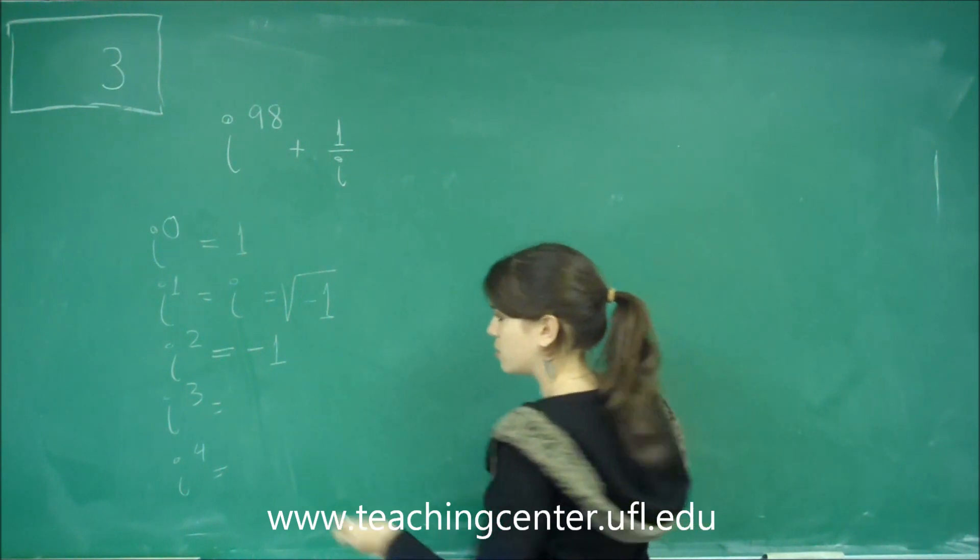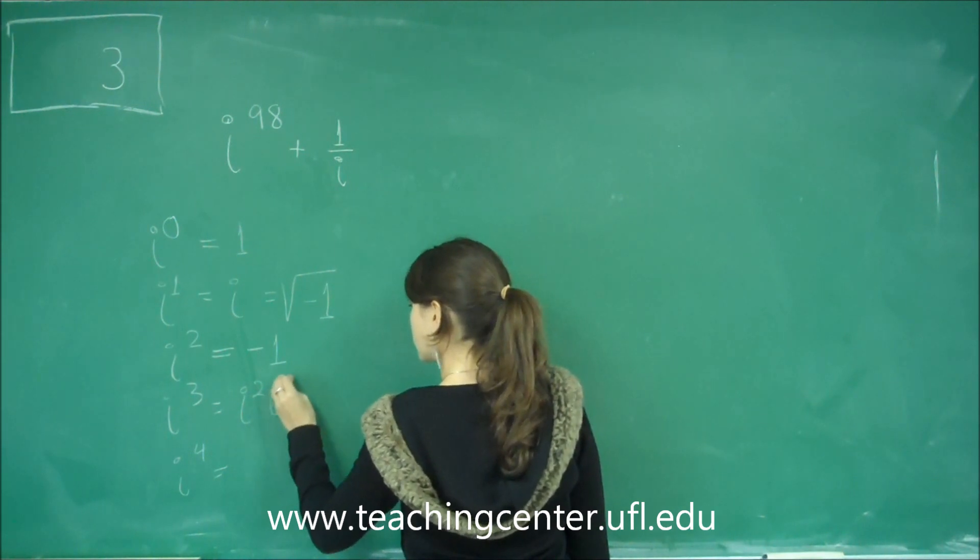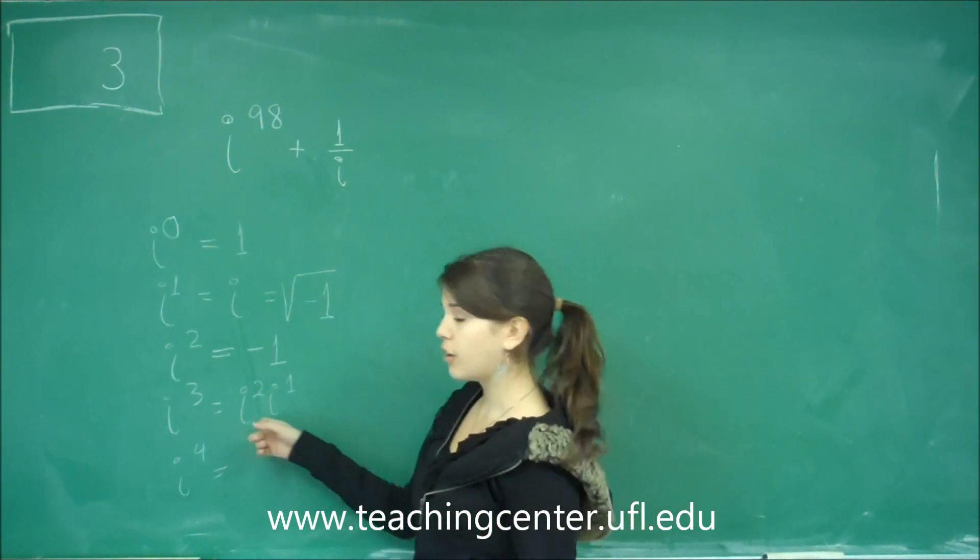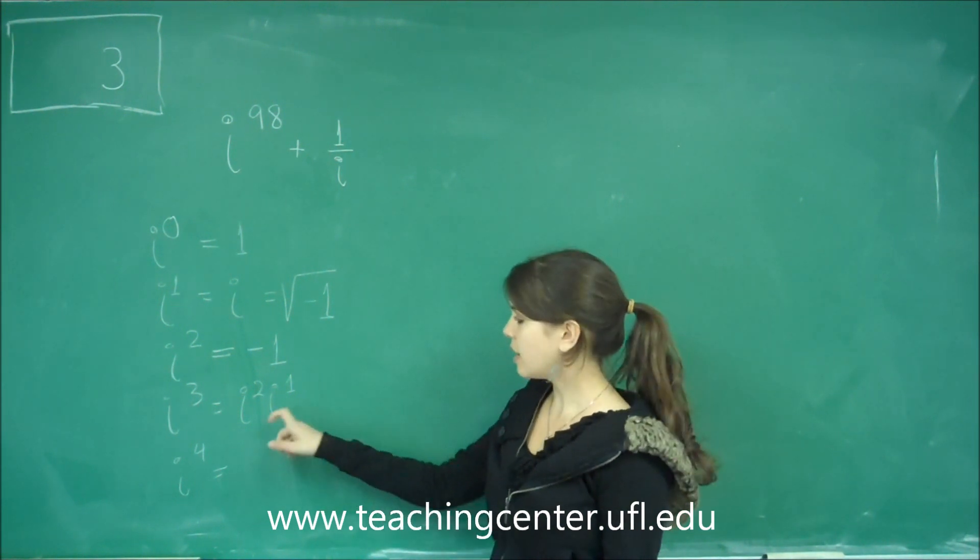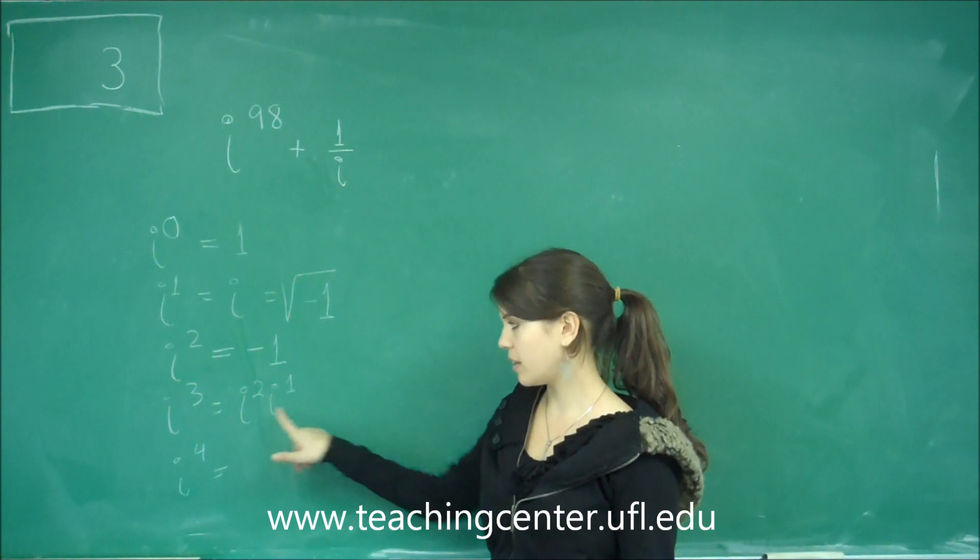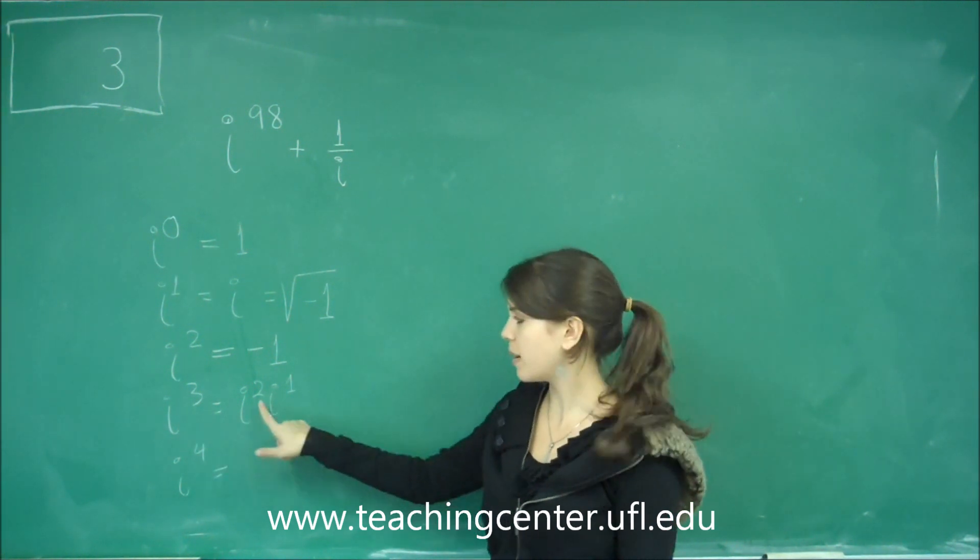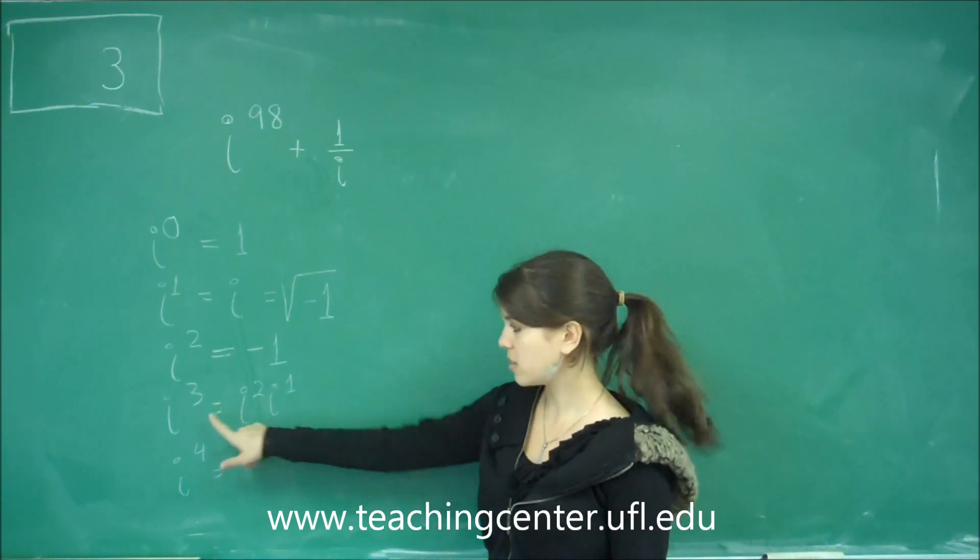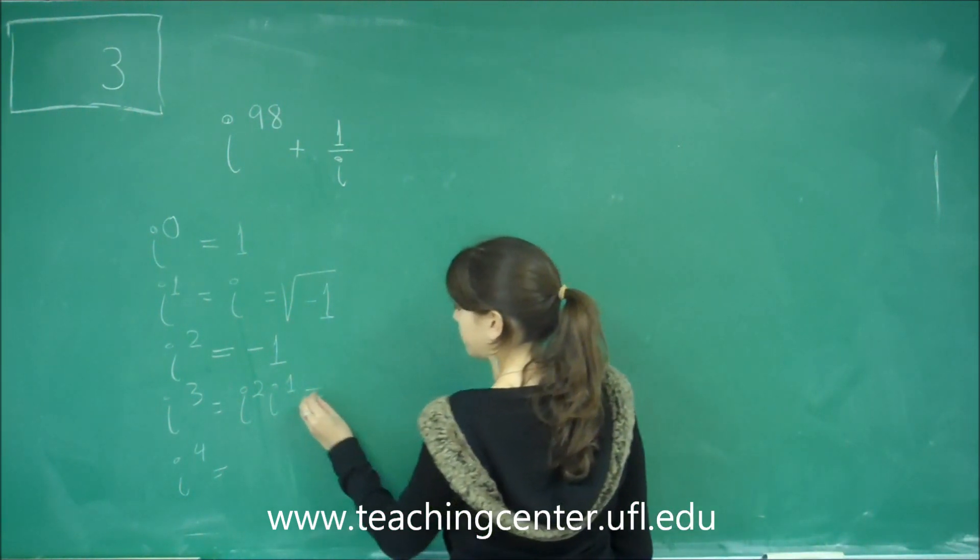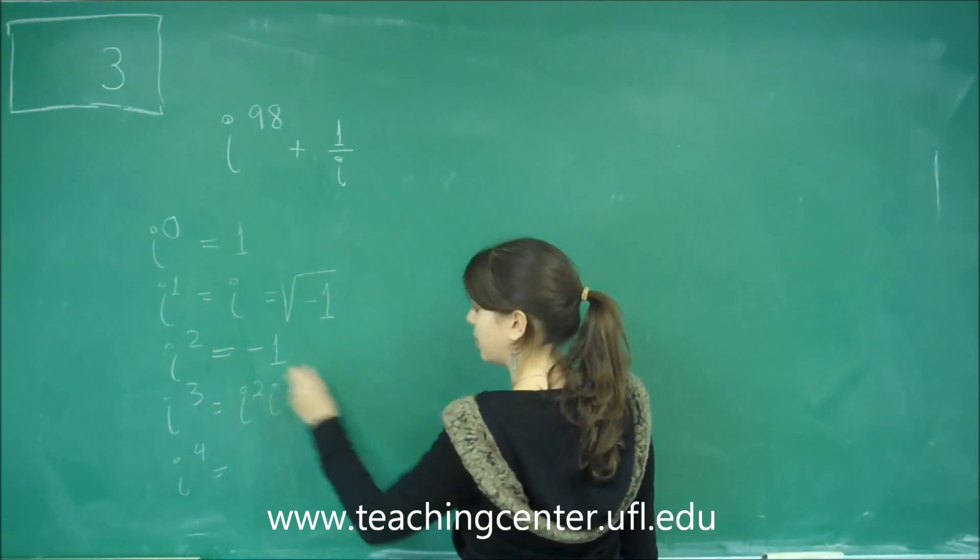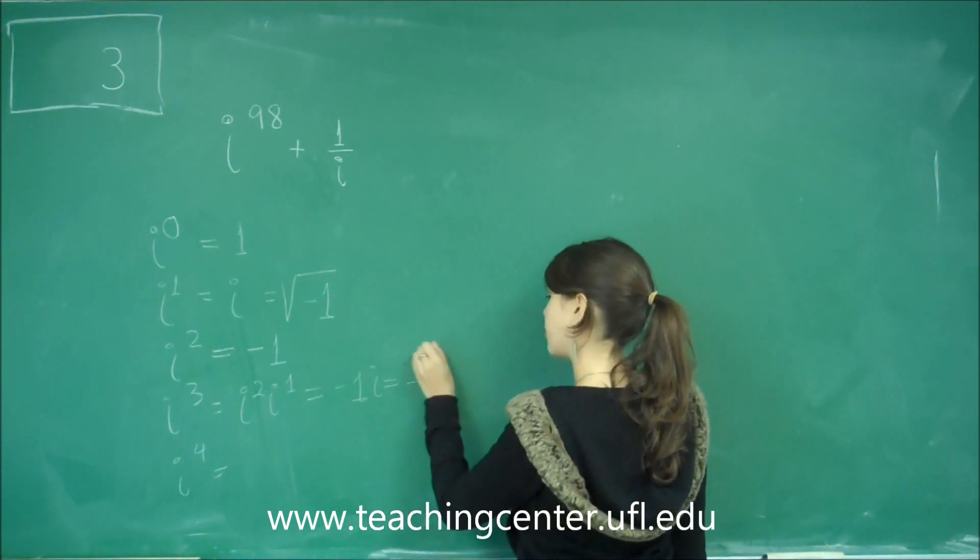i to the 3rd, the trick here is to just divide this up into i squared and just i to the 1st power. Remember that for i, it's the same thing as for any other variable, that when you have these separated like that, you add 2 and 1 to get 3. You don't multiply 2 times 1, because that would give you i squared. And so when we plug in for i squared, negative 1 times i, we get negative i.